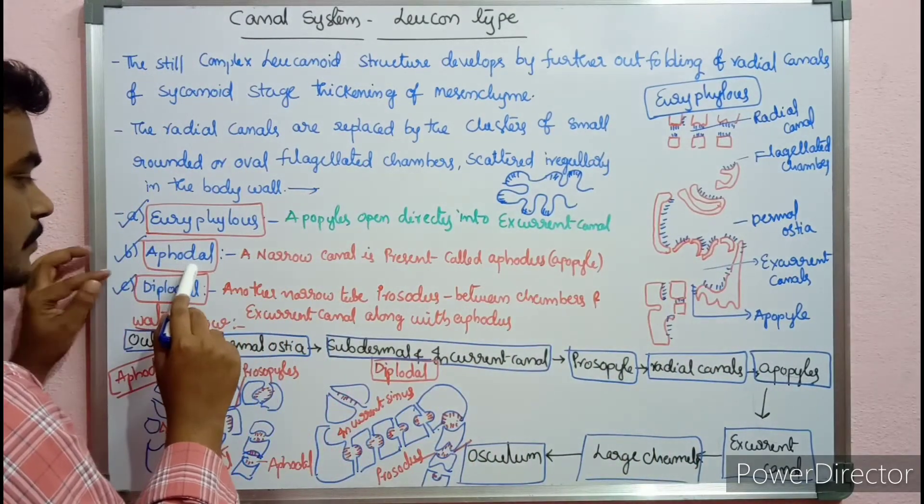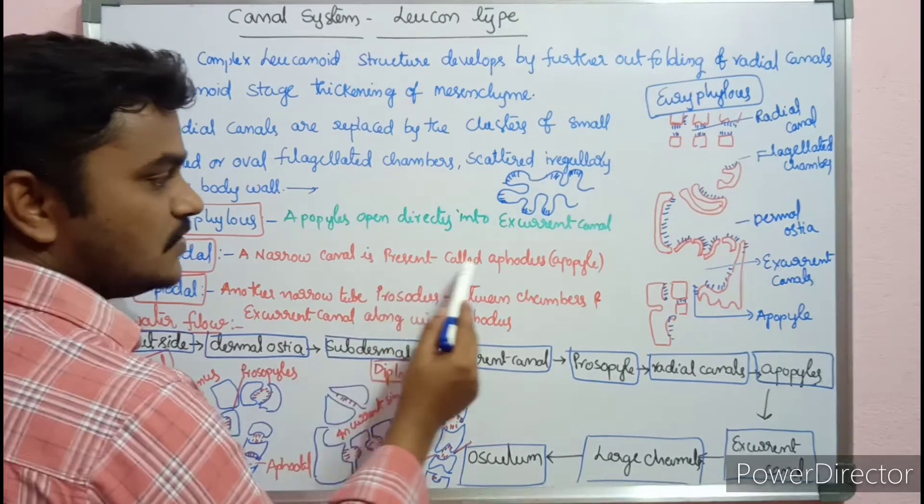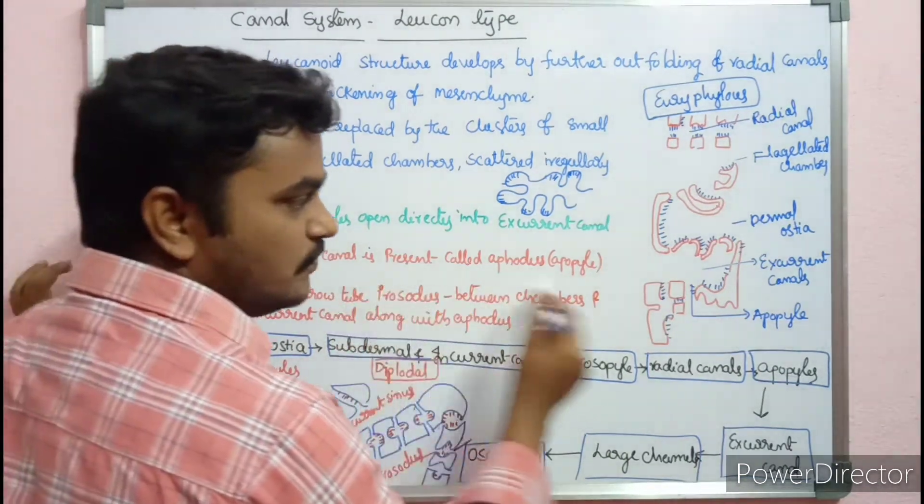In the second type, the Aphodal type, a narrow canal is present called the aphodus. The apopyles in this type connect to the excurrent canals through this narrow canal called the aphodus.